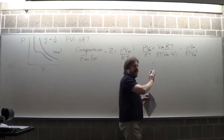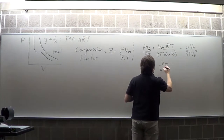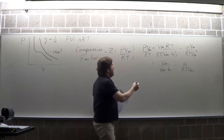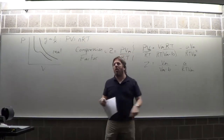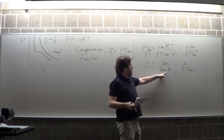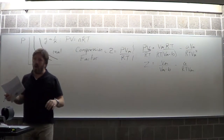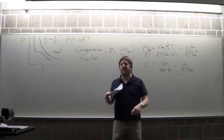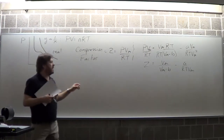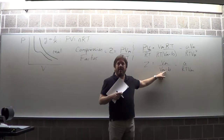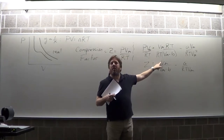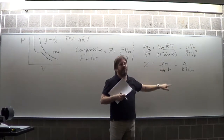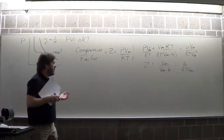Does B drive Z up? Yes, of course it does. Put in numbers: 5/(5−1) is a bigger number than 1, so yes. B drives Z up because that's the volume of the gas itself — I have less available volume than I think, which drives pressure higher. A is always positive, so that drives Z down due to attractive interactions. You can think of Z as a correction to the pressure.